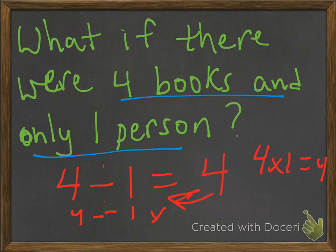So again, if you follow along, four times one equals four. But we found out that four divided by one equals four as well.